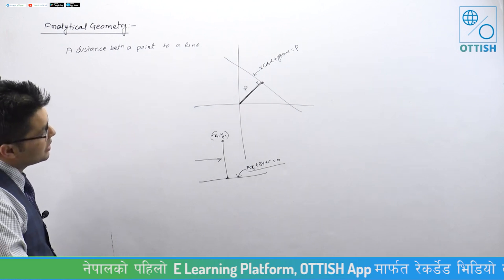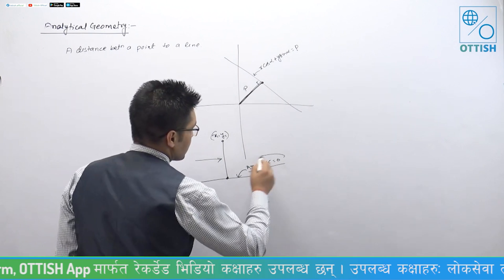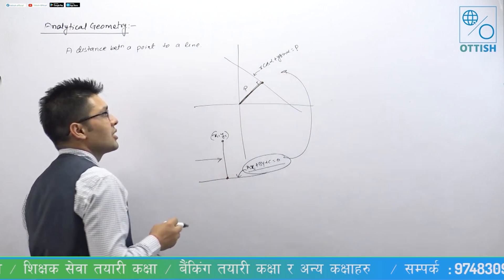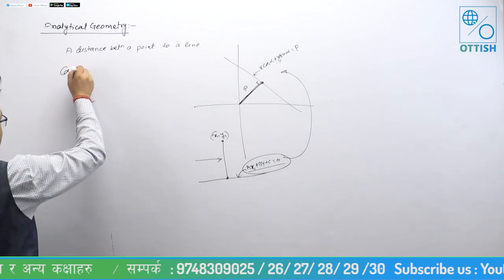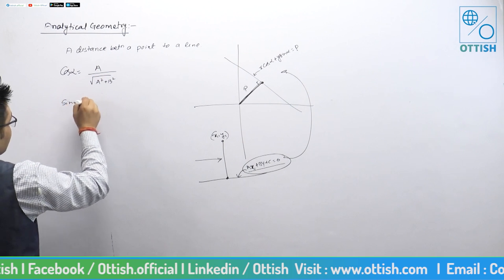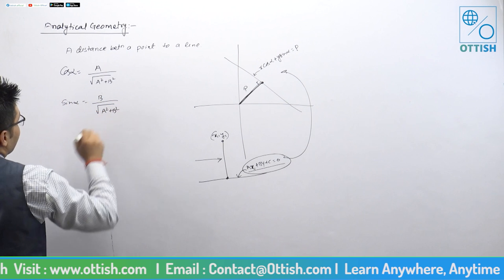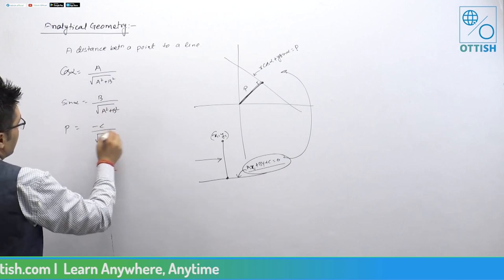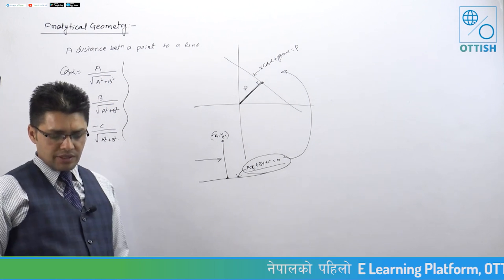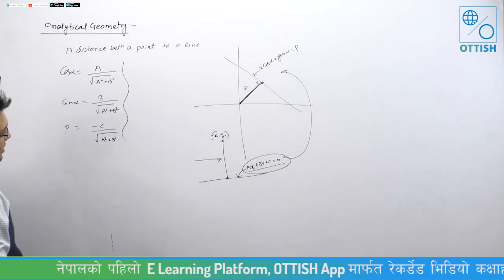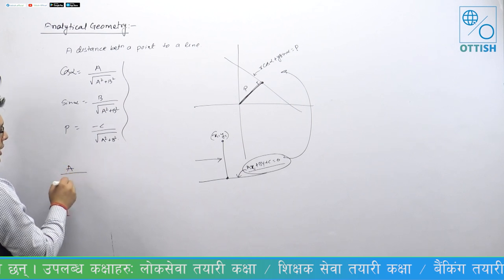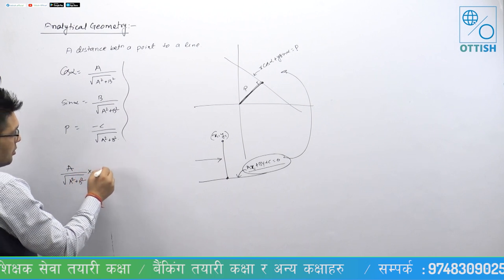From the normal form, x cos α plus y sin α equals p. We have cos α is equal to a divided by root over a squared plus b squared, and sin α is equal to b divided by root over a squared plus b squared.